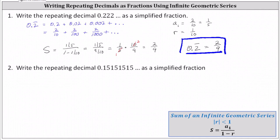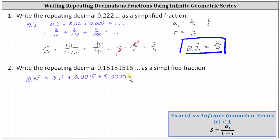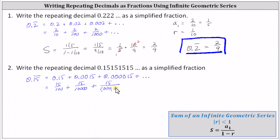Let's look at a second example. We have zero point one five one five one five repeating, which we can also write as zero point one five with a bar over the one five, which is equal to zero point one five plus zero point zero zero one five plus zero point zero zero zero zero one five, and so on. Let's write this infinite geometric series using fractions. We have fifteen hundredths plus fifteen ten-thousandths plus fifteen millionths, and so on.